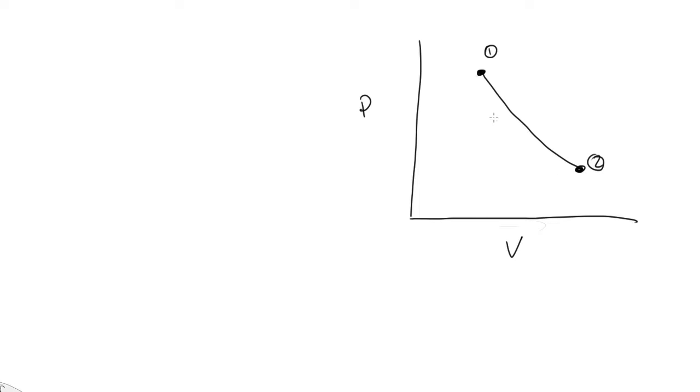We then have an isothermal compression. So that's going to follow an isotherm, a hyperbola. And finally, we have a constant volume process. So there's our isotherm. And there is our constant volume.